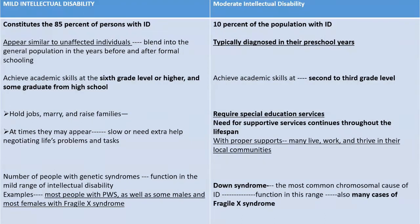Mild ID constitutes 85% and is the most prevalent severity. Moderate constitutes only 10%. Mild individuals appear similar to unaffected individuals and blend into the general population before and after formal schooling, while moderate cases are typically diagnosed in their pre-school years. Mild individuals may achieve academic skills at sixth grade or higher and some may graduate from high school, whereas moderate individuals achieve only second to third grade level. Many with mild ID hold jobs, marry, and raise families, while those with moderate ID require special education and supportive services throughout their lifespan, though with proper support many will live, work, and thrive in their communities.